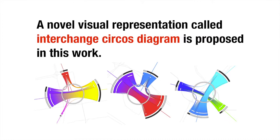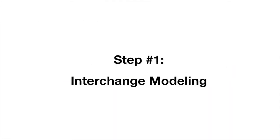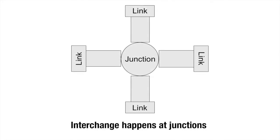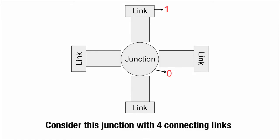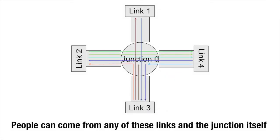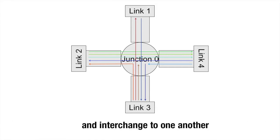A novel visual representation called Interchange Circus Diagram is proposed in this work. Interchange happens at junctions. Consider this junction with four connecting links. People can come from any of these links and the junction itself and interchange to one another.